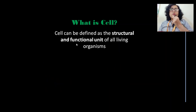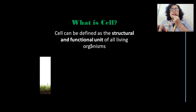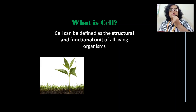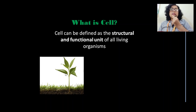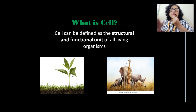Cell is also the functional unit of a living organism. Let's take the example of a plant. The leaf performs the function of photosynthesis, and the root performs the function of absorbing water. What is present inside the leaf and root that carries out these functions? It is the plant cells. Plant cells are performing the functions of the plant.